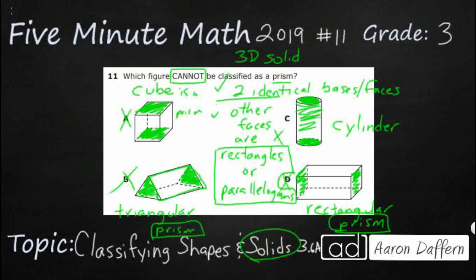So here's the tricky thing we have to remember. A cube is a prism. The word prism does not show up in the name but it is a prism. A cylinder is not a prism and so our answer is going to be C.